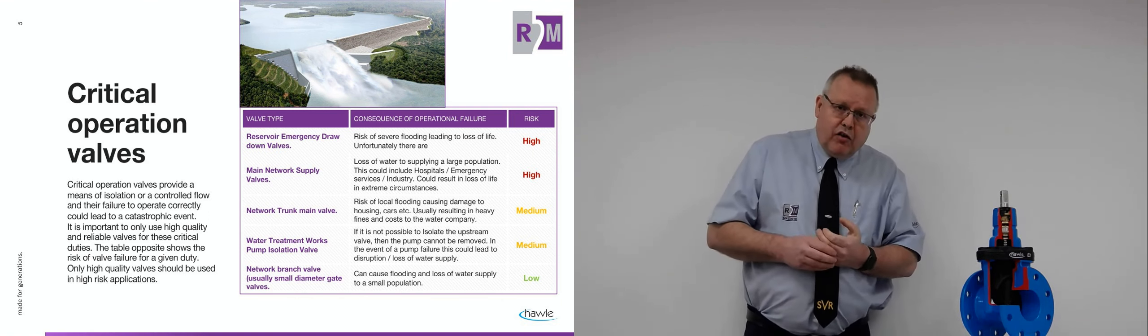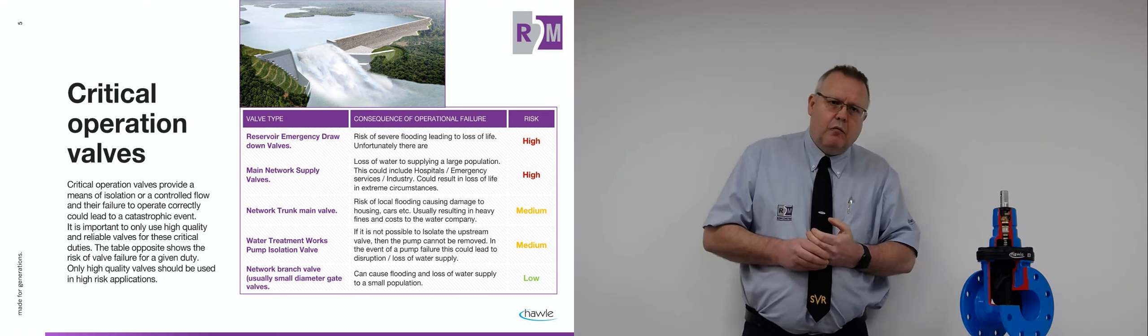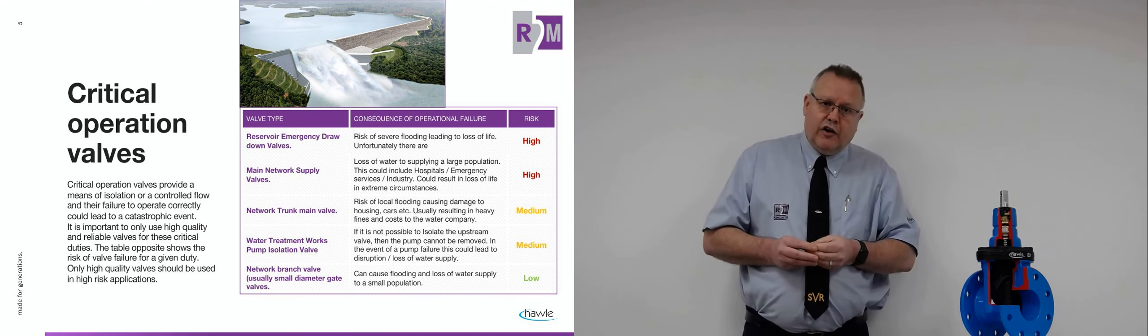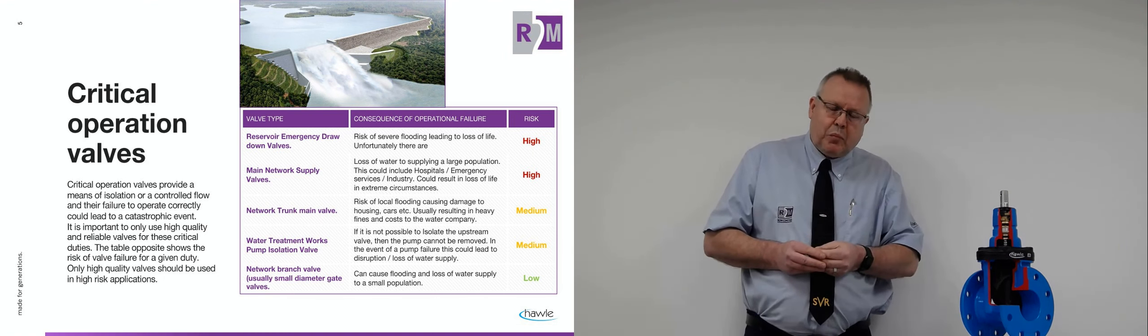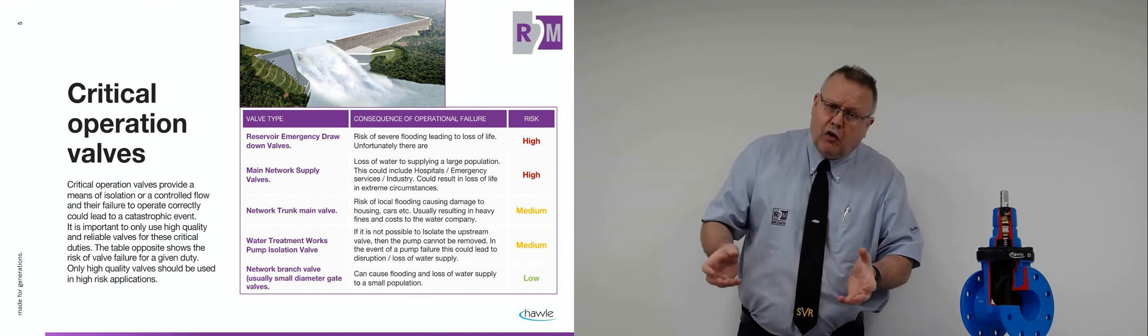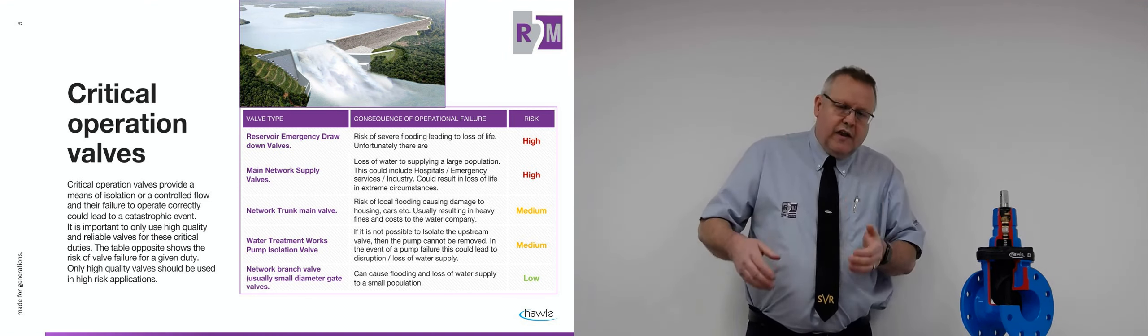Another good example is a scour valve in a reservoir. Back in August 2019 in the UK, a reservoir called Todbrook made headline news. And the reason being is they couldn't get the water out of the reservoir. So the scour valve is almost like the plug of the reservoir. You open this valve, it lets all the water out.